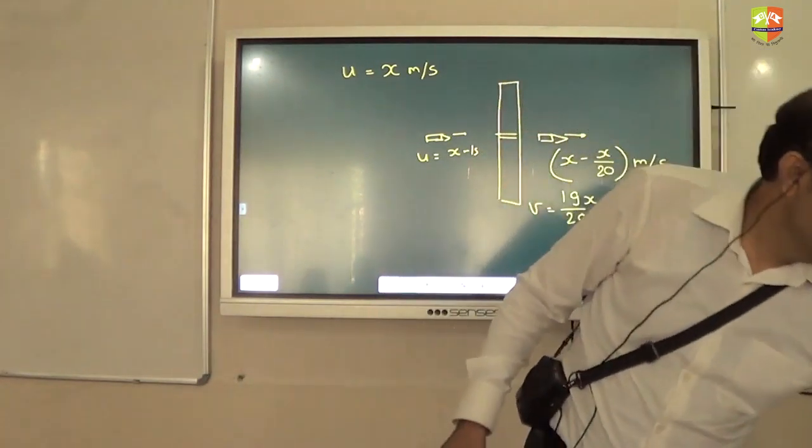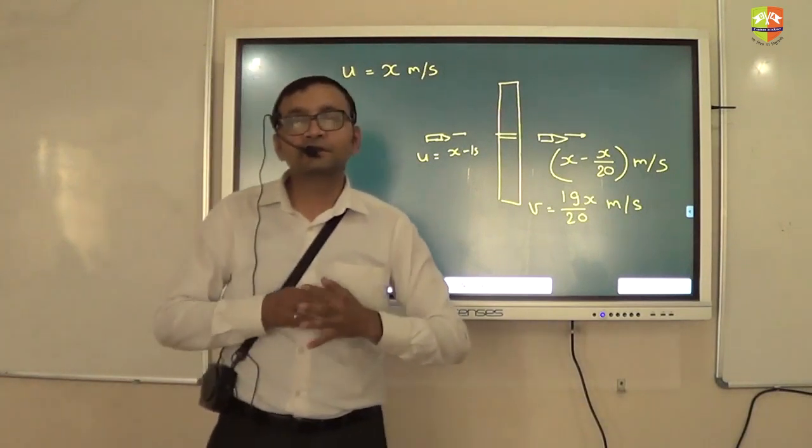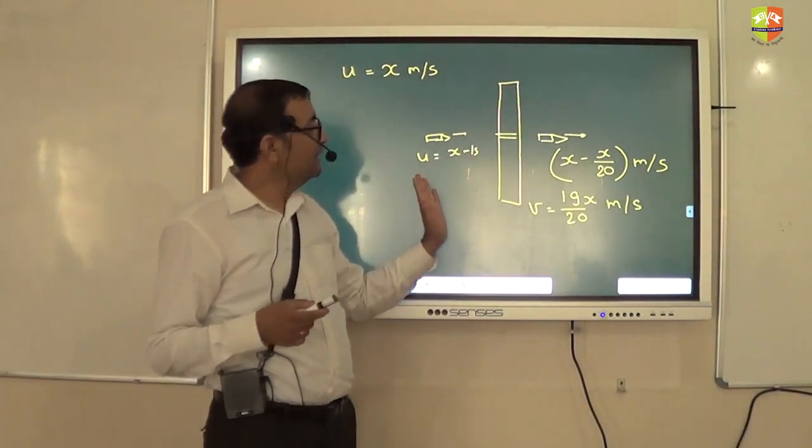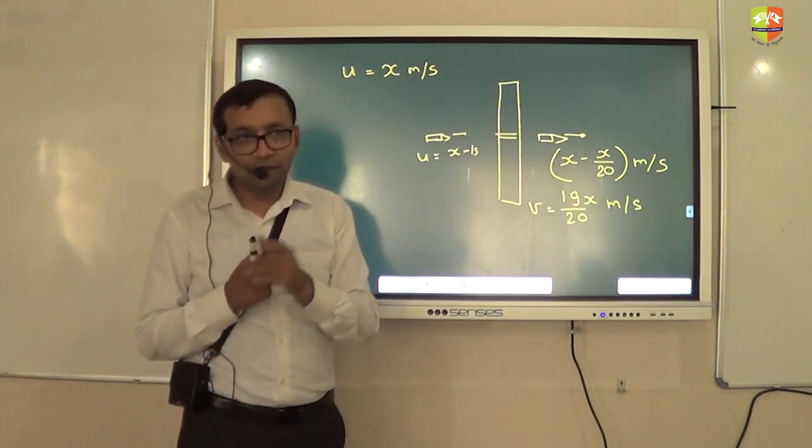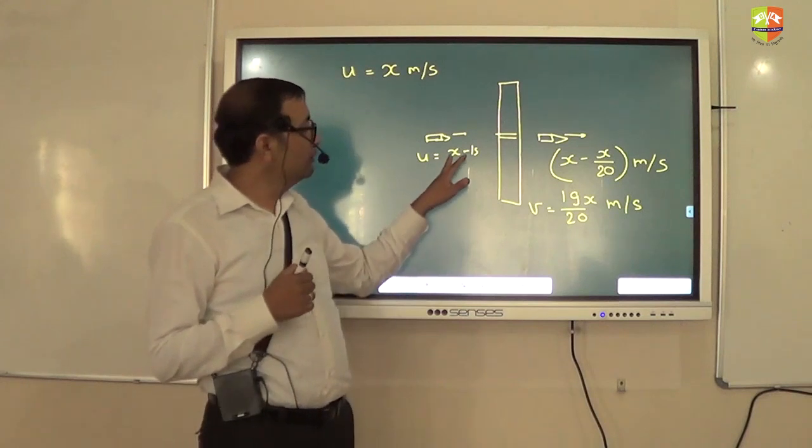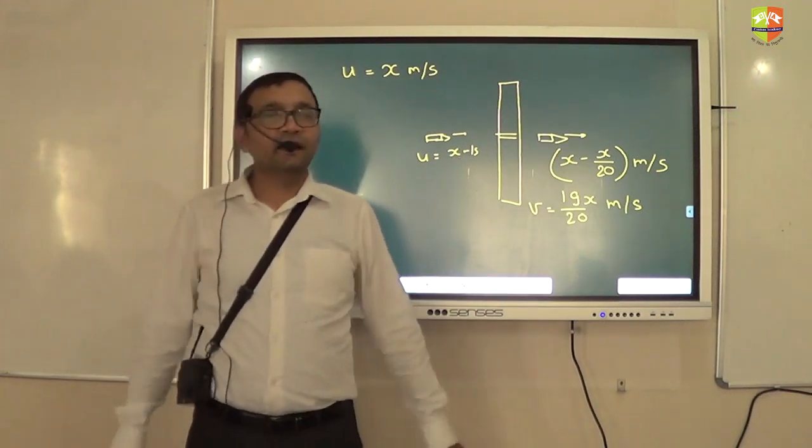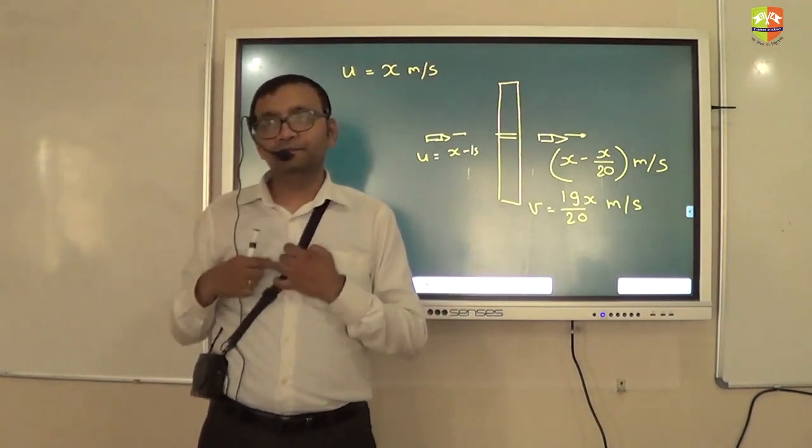Okay? Now how to solve this question anyone? I want to hear about your thought process. How to solve this? See what is happening is that if you have one plane, its velocity goes from x to 19x by 20. But it doesn't stop. They are asking you to find out how many planes are required to stop the bullet.